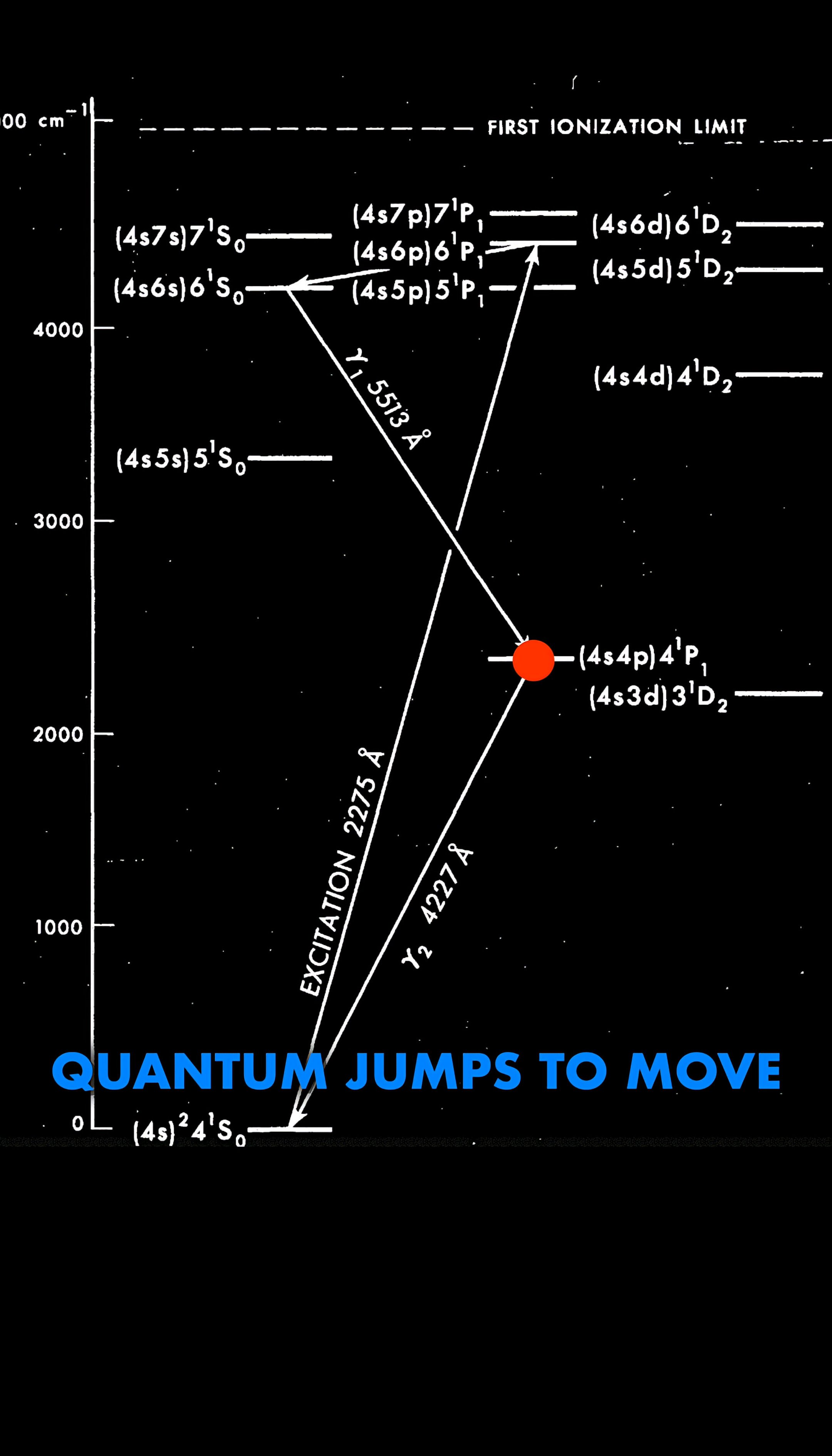Atoms can perform quantum jumps to move from one energy level to another. When they move down, they emit light of the respective energy. And in order to move up, they must first absorb the correct energy, for example from light.